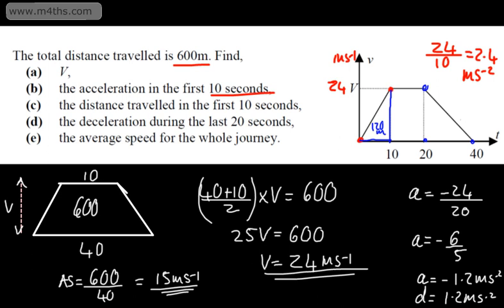That's a brief introduction to speed-time graphs or velocity-time graphs. The area under the graph is the distance covered, and the gradient of the lines gives us the acceleration — or, as we've seen, the deceleration.